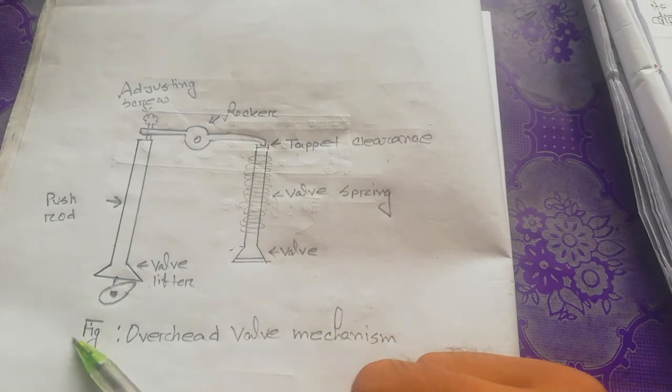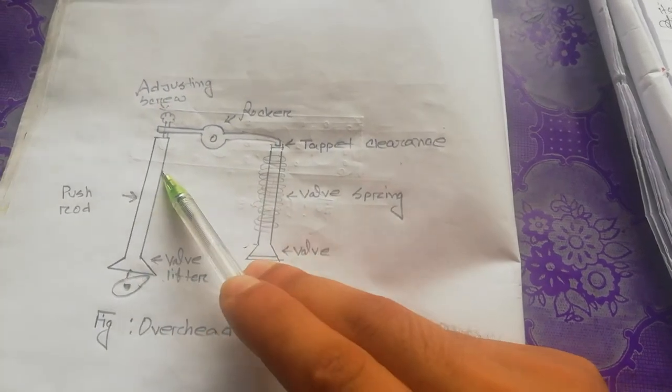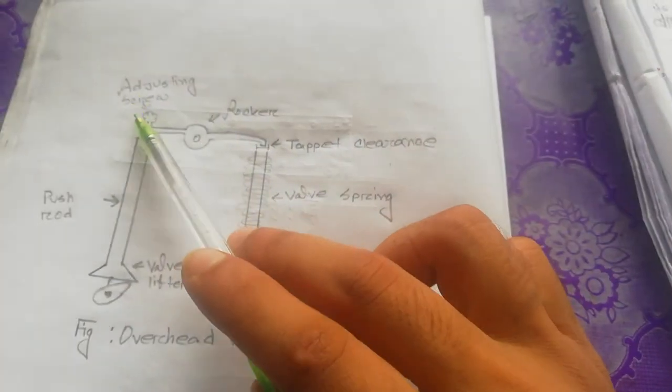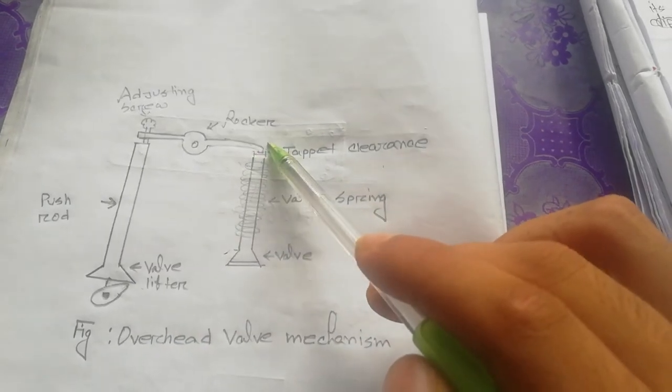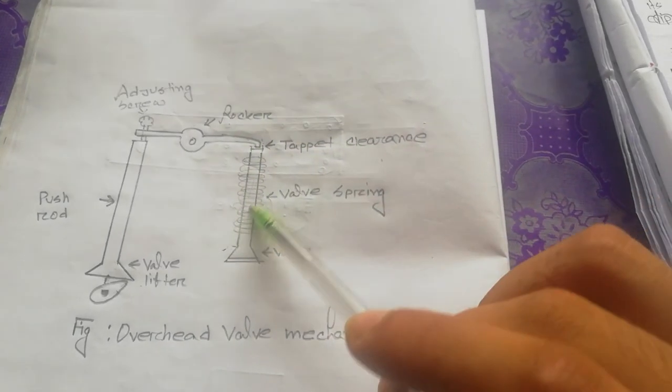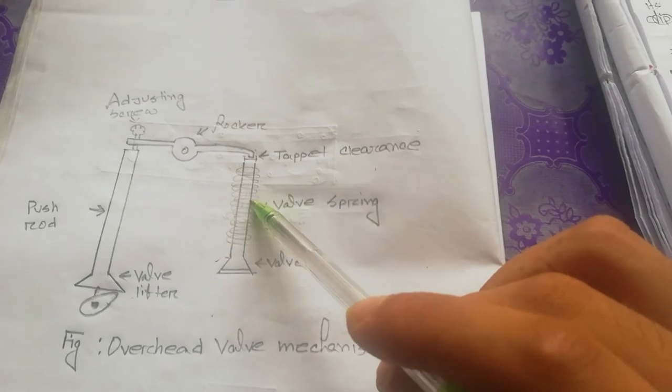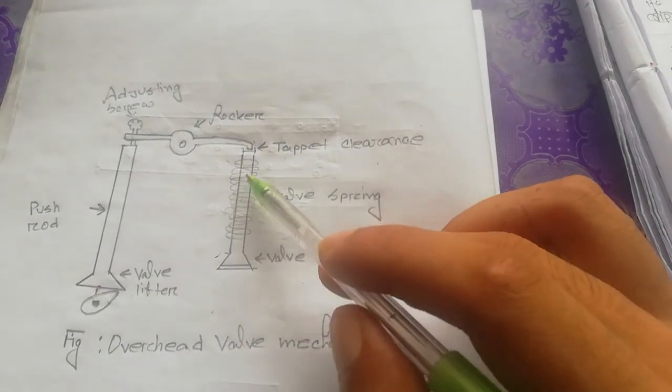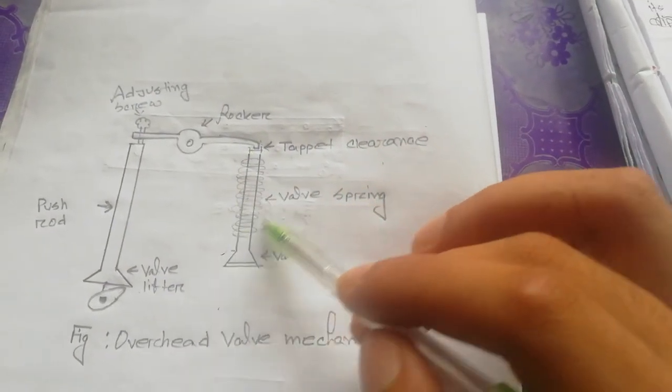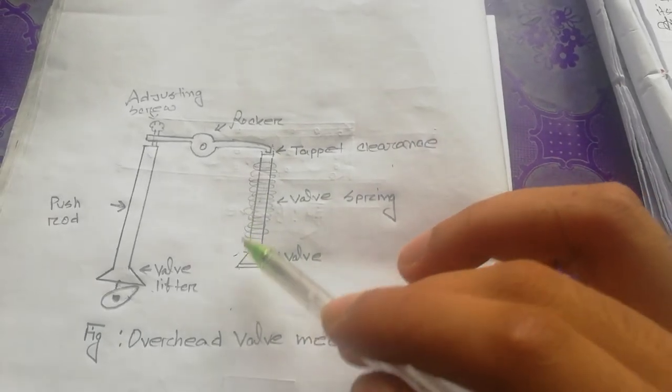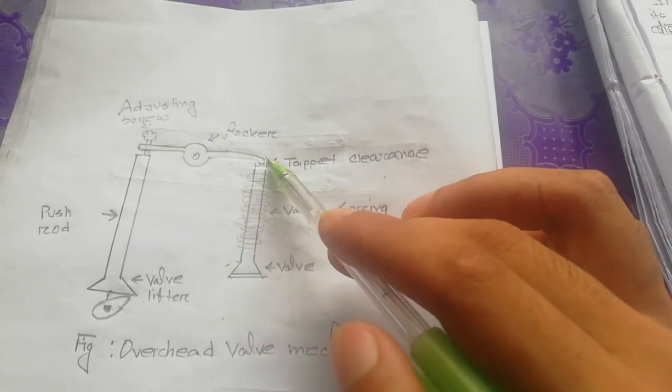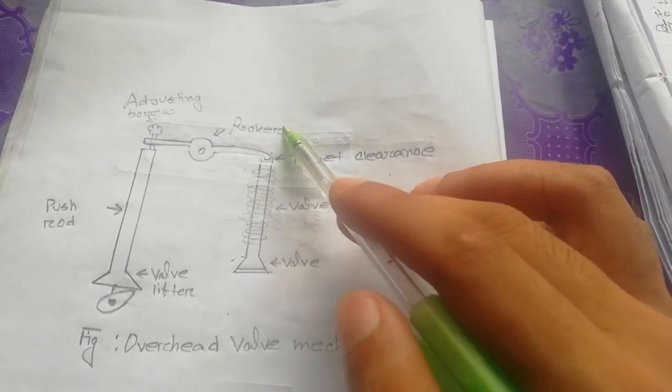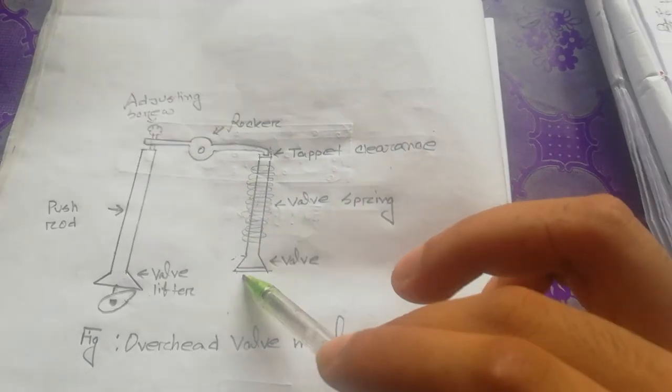When the cam lobe rotates, the spring will be compressed at the top of the valve. After the action, we will be able to get the valve to open. When the valve opens, the valve will allow flow.